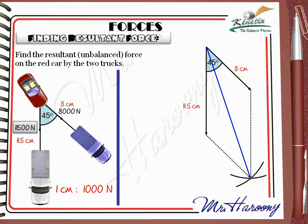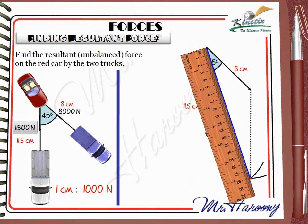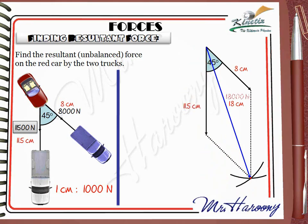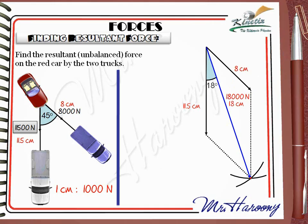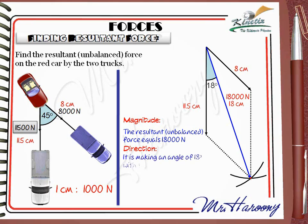The diagonal of the parallelogram is your resultant force. Measure its length using a ruler — the diagonal is 18 cm. Applying the scale, this means the force is 18,000 N. To find the direction, use the protractor to measure the angle with the reference force, the vertical 11,500 N. The protractor shows the diagonal makes an angle of 18 degrees with the vertical force. So the resultant unbalanced force equals 18,000 N, making an angle of 18 degrees with the vertical force to the southeast.